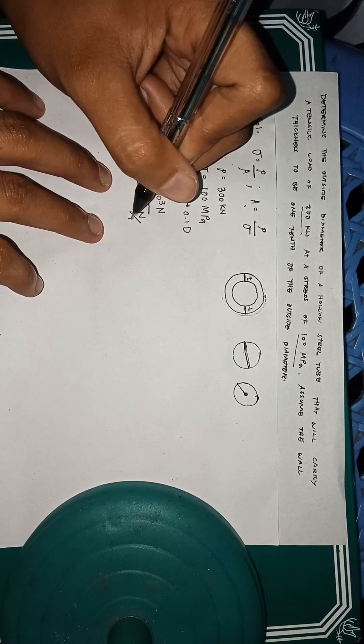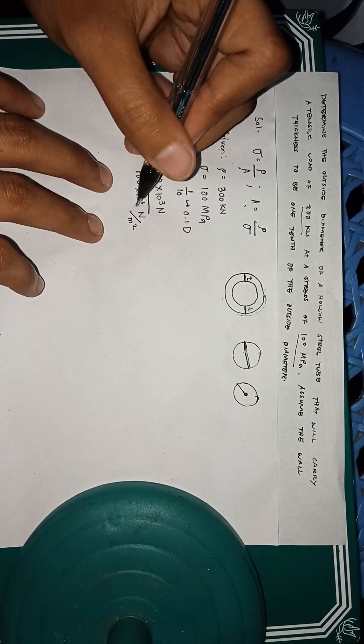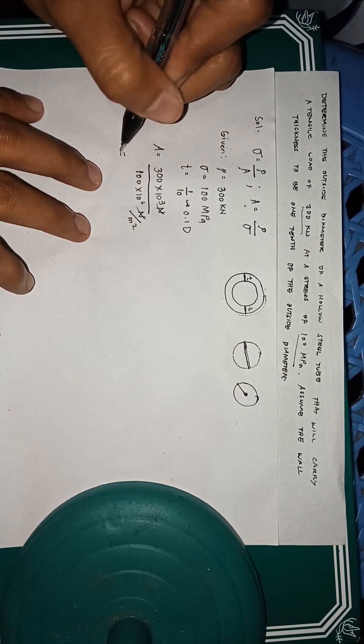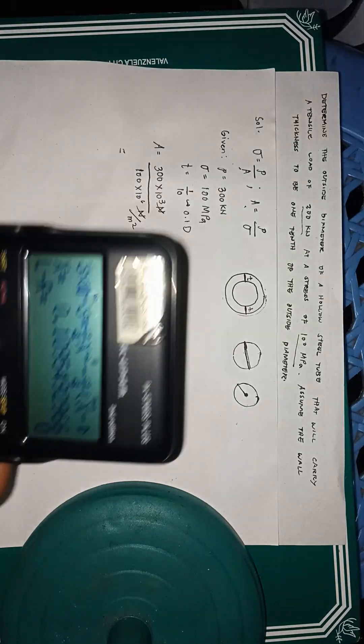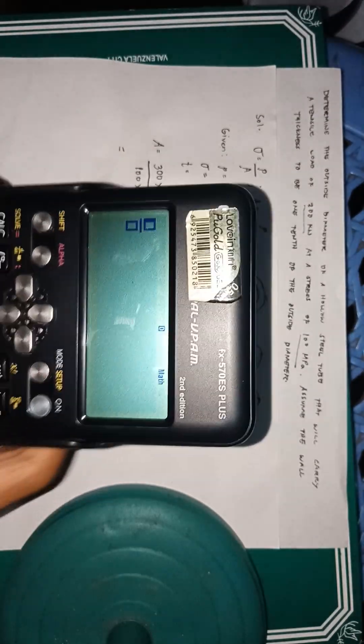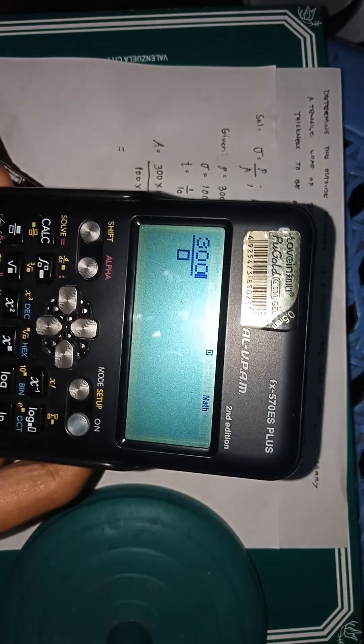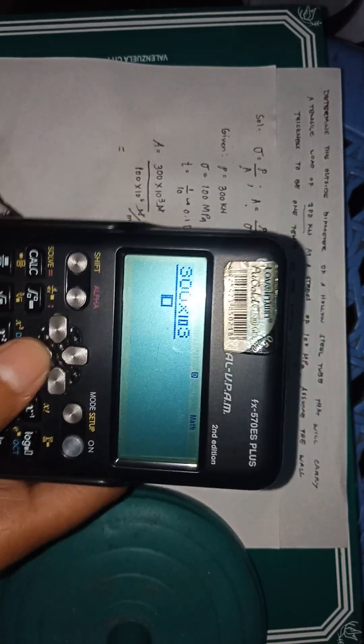The unit of pascal is newton over meter squared. These two will cancel. Now we're gonna compute 300 times 10 to the power of 3 newton over 100 to the power of 6.